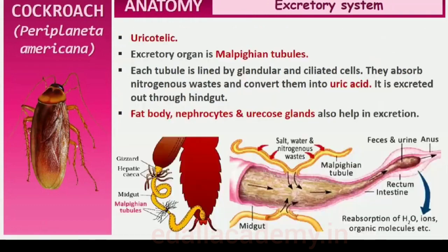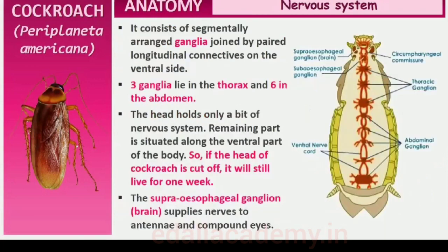Excretion is performed by Malpighian tubules. Each tubule is lined by glandular and ciliated cells that absorb nitrogenous waste products and convert them into uric acid, which is excreted out through the hindgut. Therefore, this insect is called uricotelic. In addition, the fat body, nephrocytes and uricose glands also help in excretion.